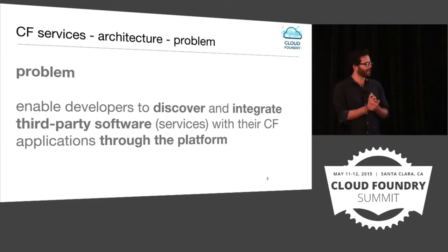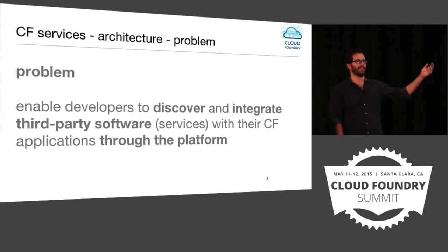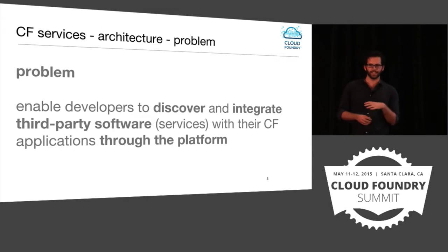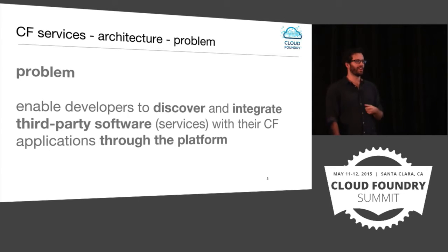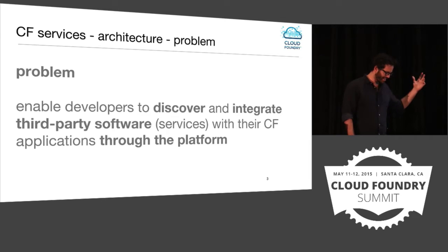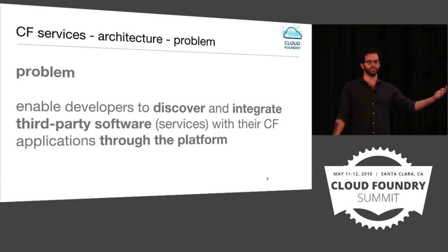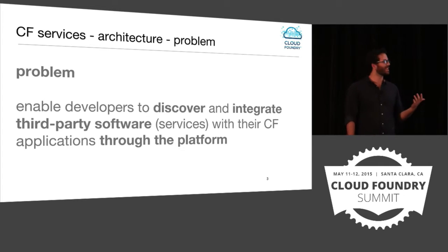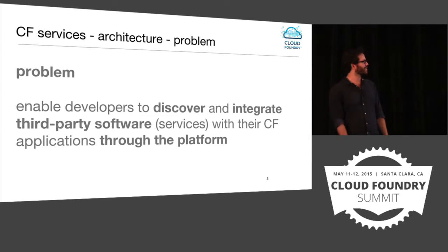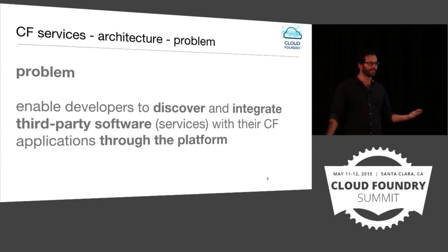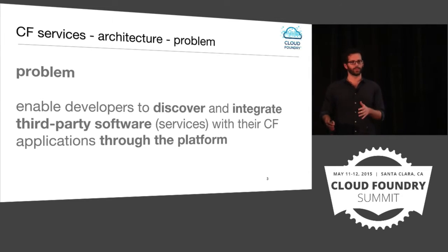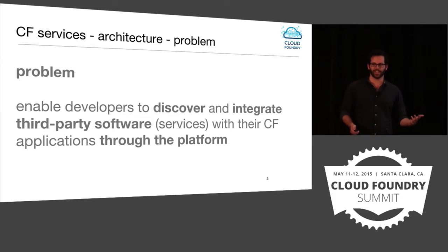When I talk about third-party software and services, what we're talking about is any software a user might want to use in the context of Cloud Foundry. The easiest example is a data persistence layer — SQL databases, Redis, RabbitMQ, Hadoop. You can take it further to include analytics tools, monitoring like New Relic, utility services like sending emails, or even team enablement services like Pivotal Tracker or Jira. Services have a pretty generic definition, and that's largely by design.